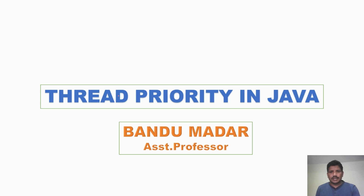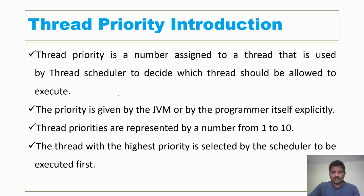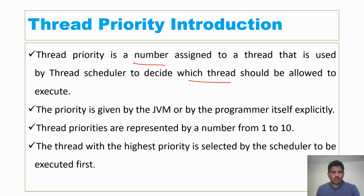Thread priority in Java programming. The thread priority is a number assigned to a thread that is used by the thread scheduler to decide which thread should be allowed to execute. Once you create more than one thread, which thread will go for execution — it is decided by thread priority.